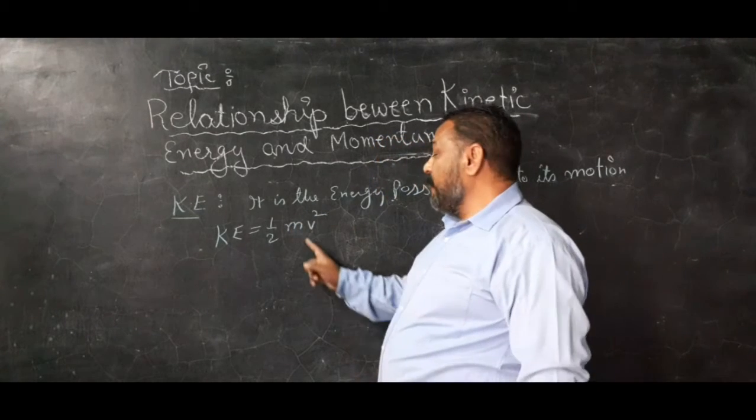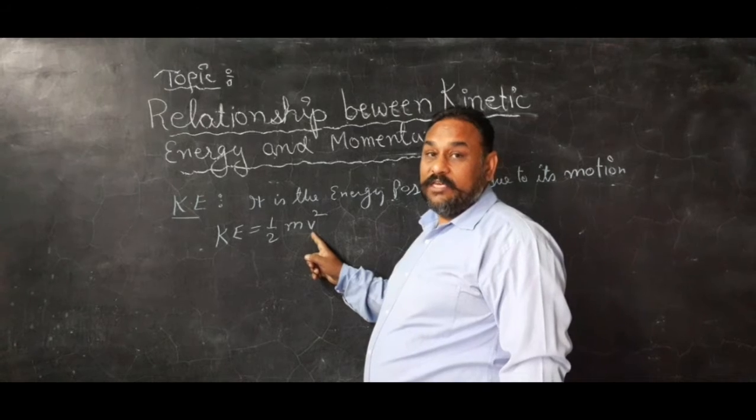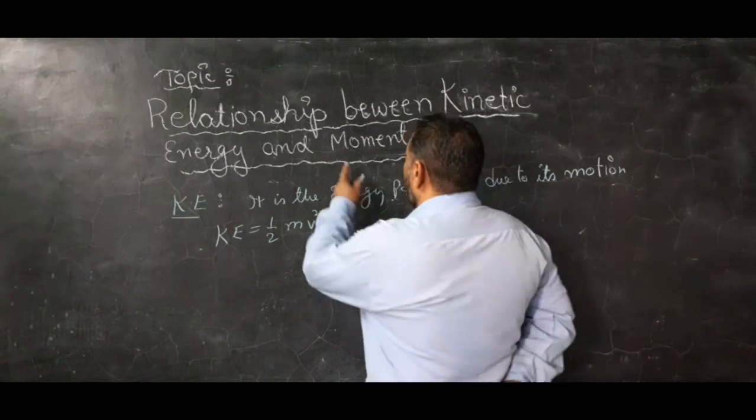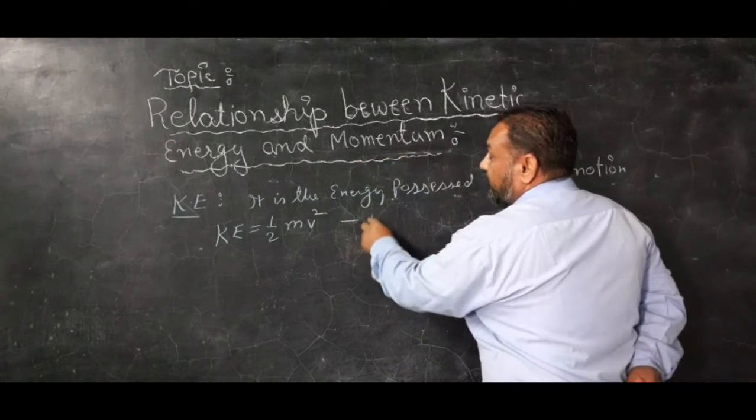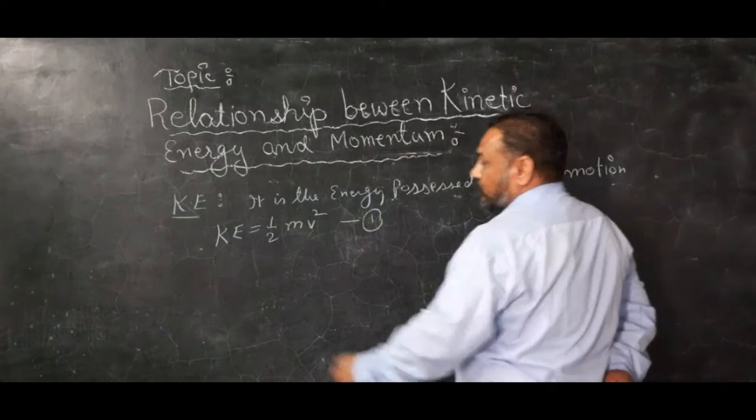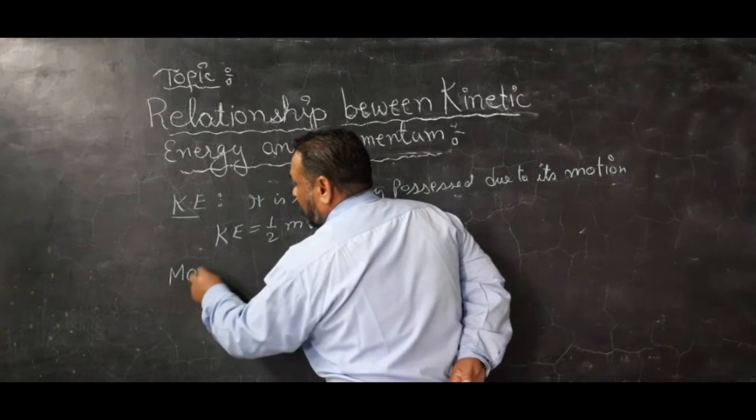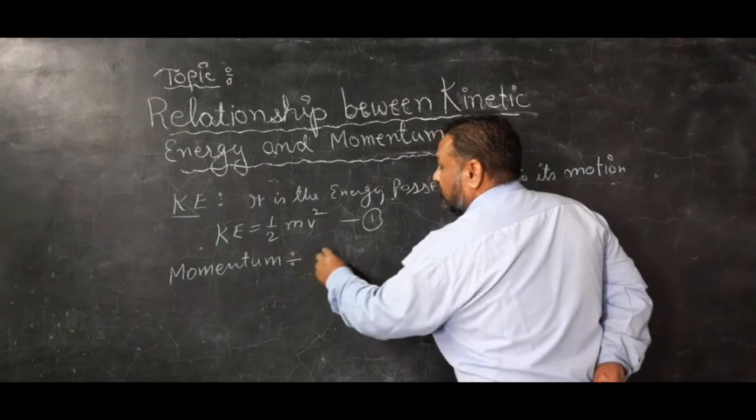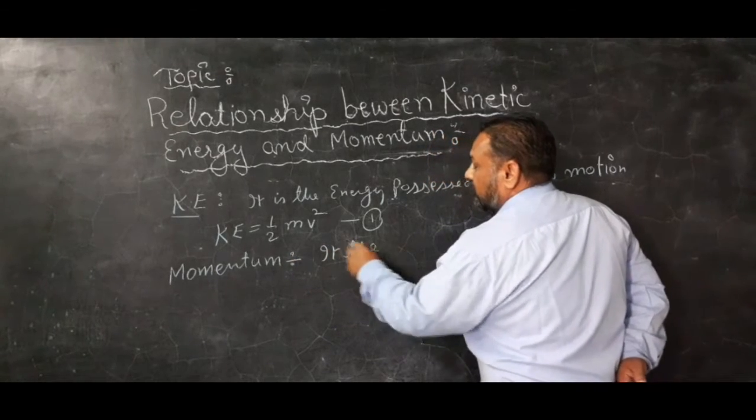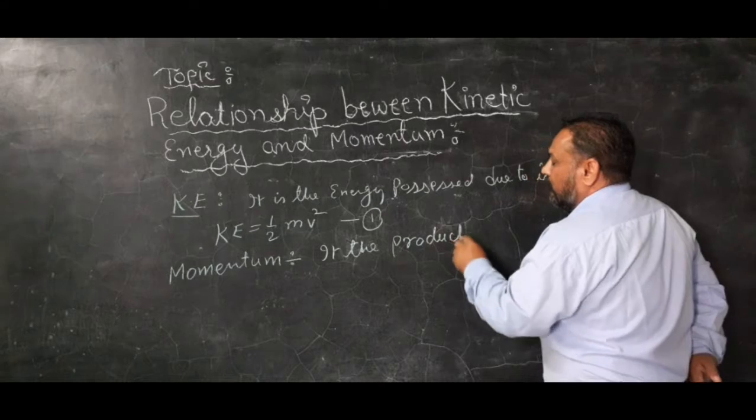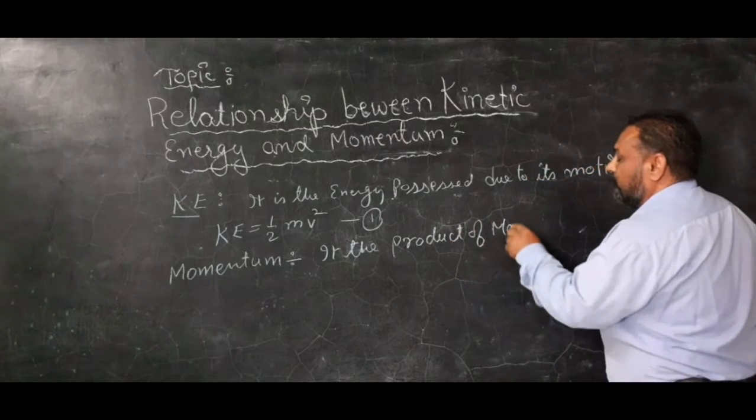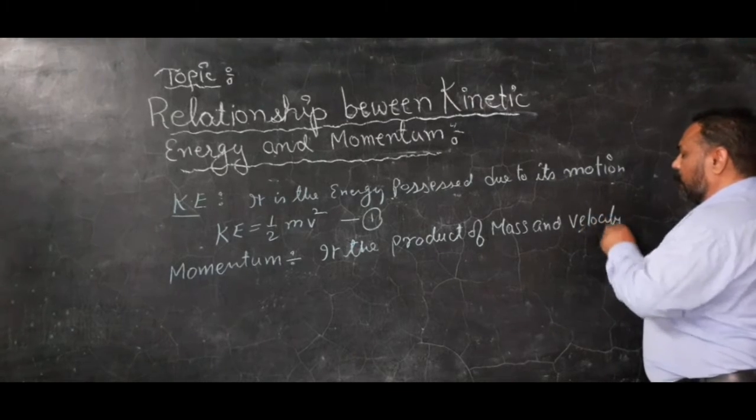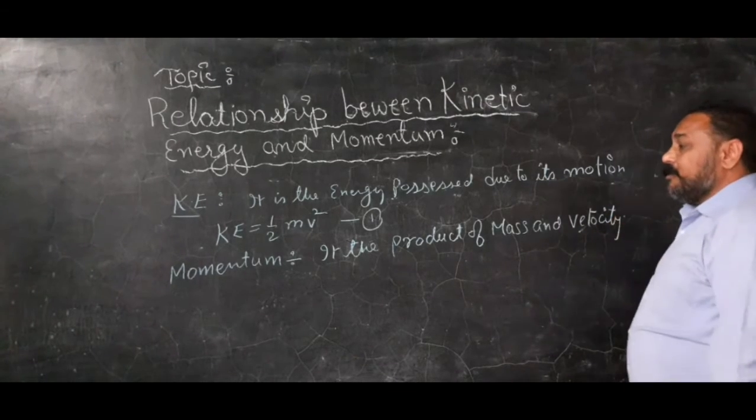Now the second definition is momentum. Momentum - it is the product of mass and velocity.